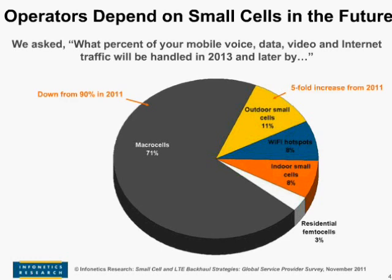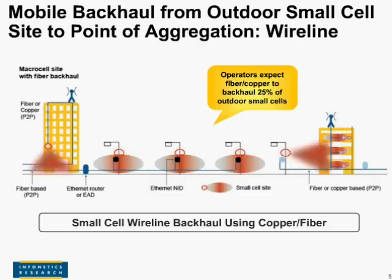So what does this backhaul environment look like? These small cells are likely to be deployed predominantly in metro areas on street poles or on the side of buildings, and they require connectivity to backhaul traffic from the cell back to some point of aggregation. There are wired and wireless options. For wired options, small cells on buildings might use extension of in-building copper or fiber cabling to an Ethernet router or extensible access device, while street pole cells could connect to on-street cabling backhauled via an Ethernet network integration device.